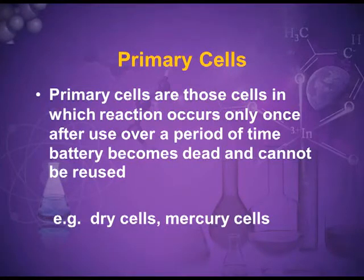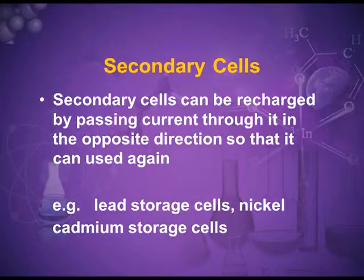Primary batteries, once used up, are wasted and cannot be recharged — they must be thrown away. Secondary batteries are rechargeable; by applying an external electric current they can be recharged and used again and again. For example, the battery used in an inverter can be recharged, but the cells used in remotes or watches must be thrown away once used up.